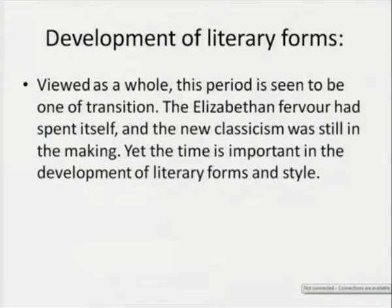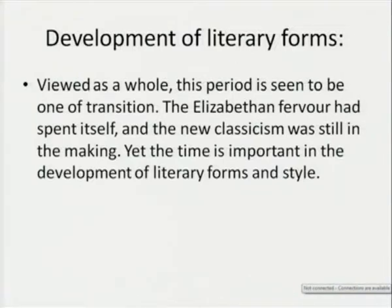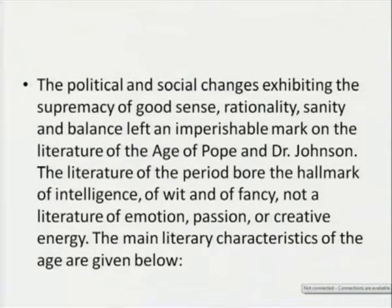Development of the literary forms — viewed as a whole, this period is seen to be one of transition. The Elizabethan power had spent itself; new classicism was still in the making; yet the time is important in the development of new literary forms. Political and social changes, exhibiting the supremacy of rationality on the literature of the days of Pope and Dr. Johnson. Why is it called the age of prose and reason? Not because of poetry, but because a large number of practical interests arising from new social and political conditions demanded expression not simply in books but in pamphlets, magazines, and newspapers.